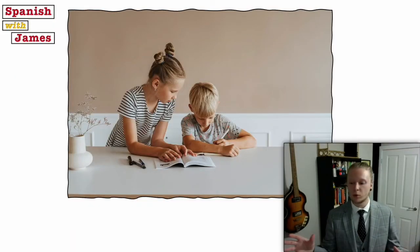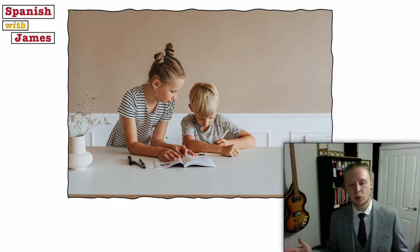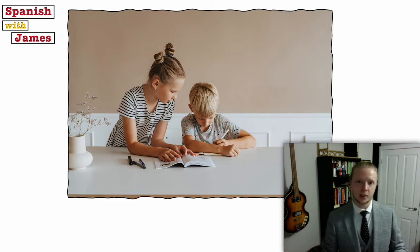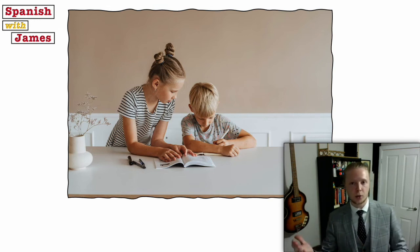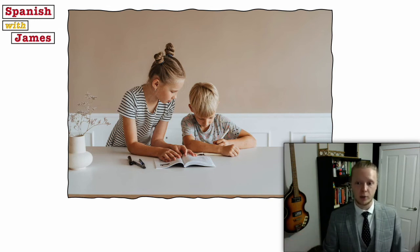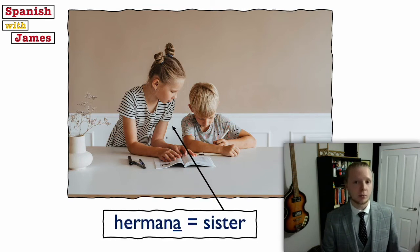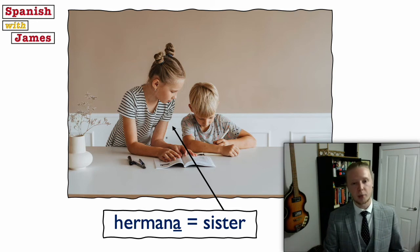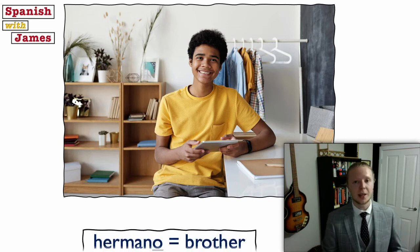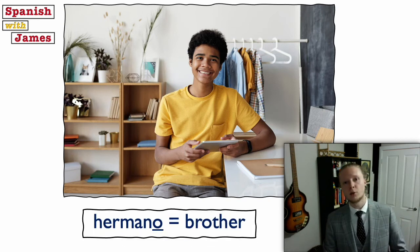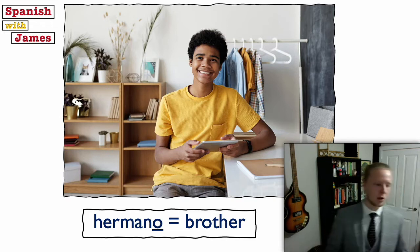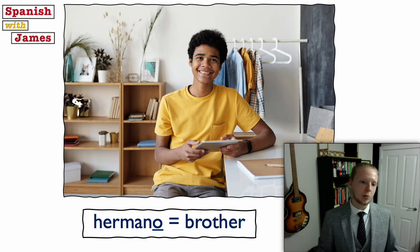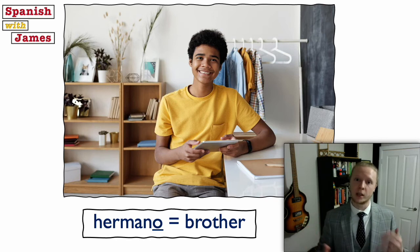From here on out all the words are going to follow the O or A ending — change O to A to get the female version. Sister is hermana — remembering that the H is always silent in Spanish. And brother is hermano; we just change that A for an O. It's easier than English: for someone learning English as a second language, 'sister' and 'brother' have no connection, whereas hermano and hermana are basically the same word.